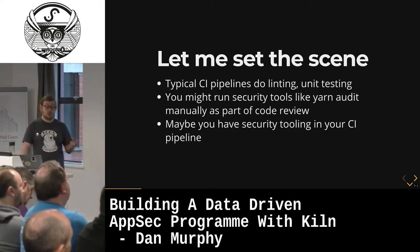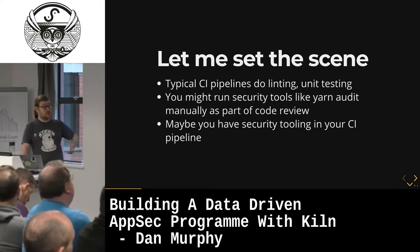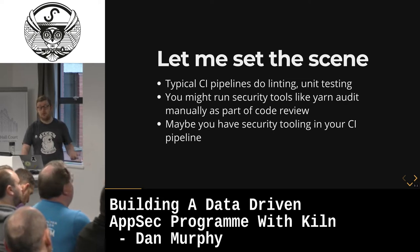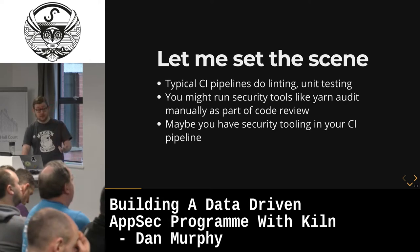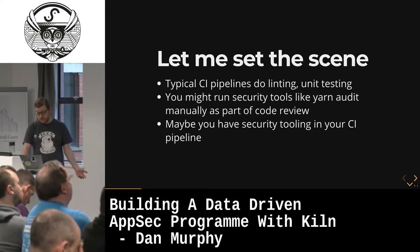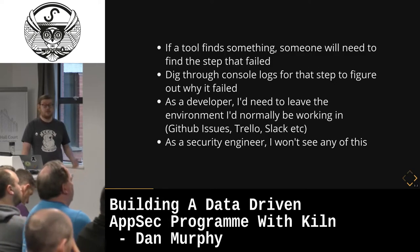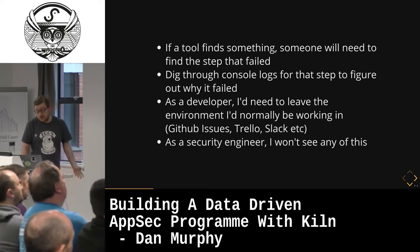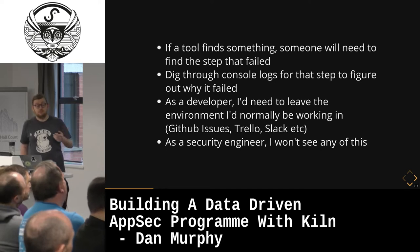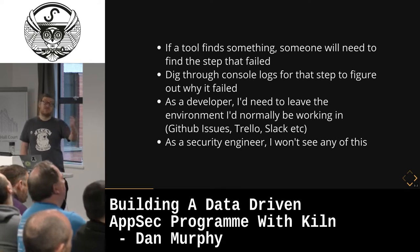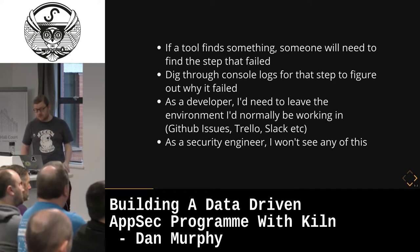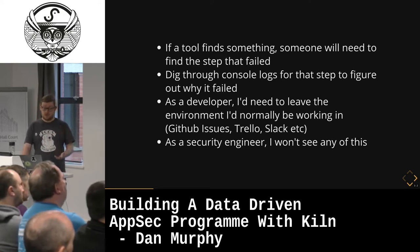If you've got a particularly mature CI setup, you might have security tools running as part of your pipeline itself. For our Ruby applications, we have Bundler Audit, Rubocop, and Brakeman as part of our pipelines. But if a tool finds something and breaks the build — which in most cases it probably should — someone's going to need to log into Jenkins, go find the build that's failed, go find the step that's failed, dig through console logs, figure out why it's failed.